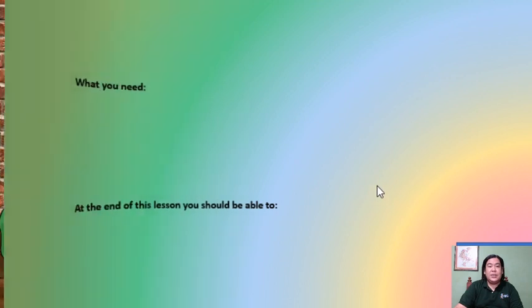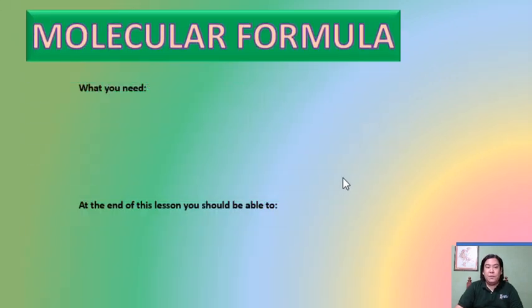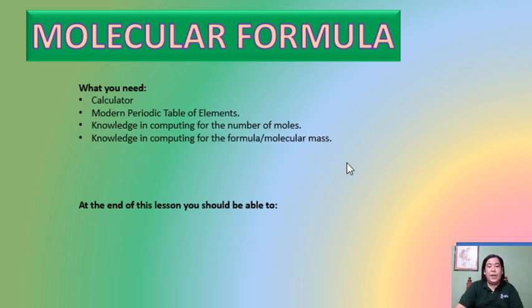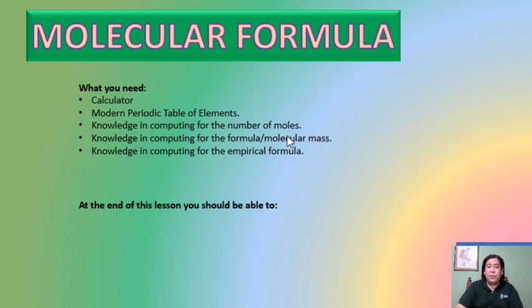Good day, STEM students. Today we'll be discussing molecular formula of a given substance. What you need in computing for the molecular formula: number one, your calculator, and number two, your modern periodic table. These are the two essential tools, followed by your knowledge in computing for the number of moles, the formula and molecular mass, and the empirical formula. If you've forgotten how to compute these three, just review and visit our YouTube channel where all the tutorial videos are available.